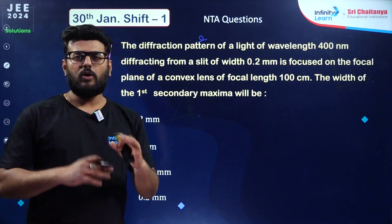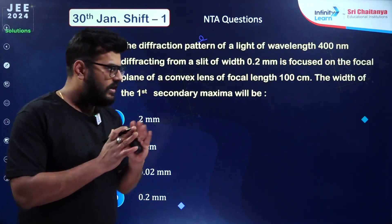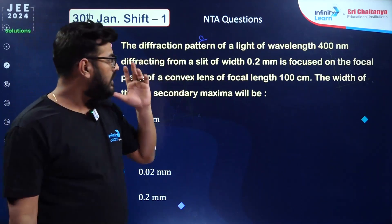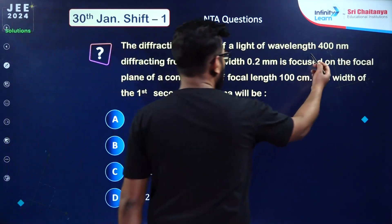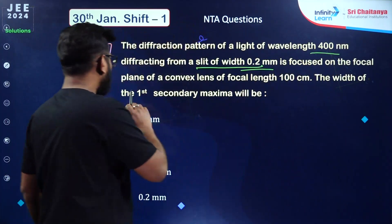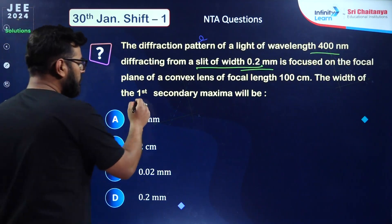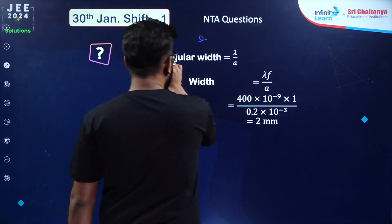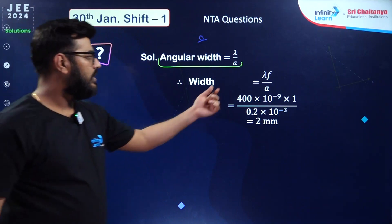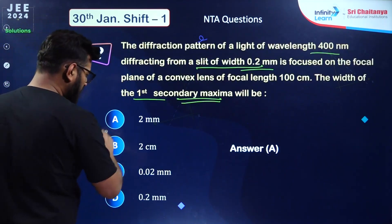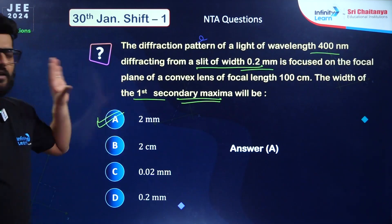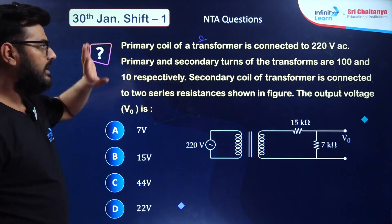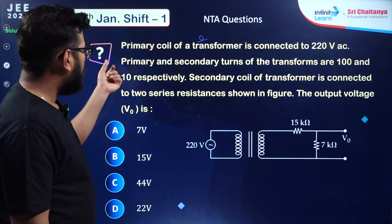From wave optics — diffraction by a single slit. Wavelength is 400 nanometer, slit width 0.2 mm, focused on focal plane of convex lens of focal length 100 centimeter. The width of the first secondary maxima is asked. Angular width is λ/a, so actual width equals λf/a. The correct answer is 2 mm, option number A. It's a standard formula-based question.